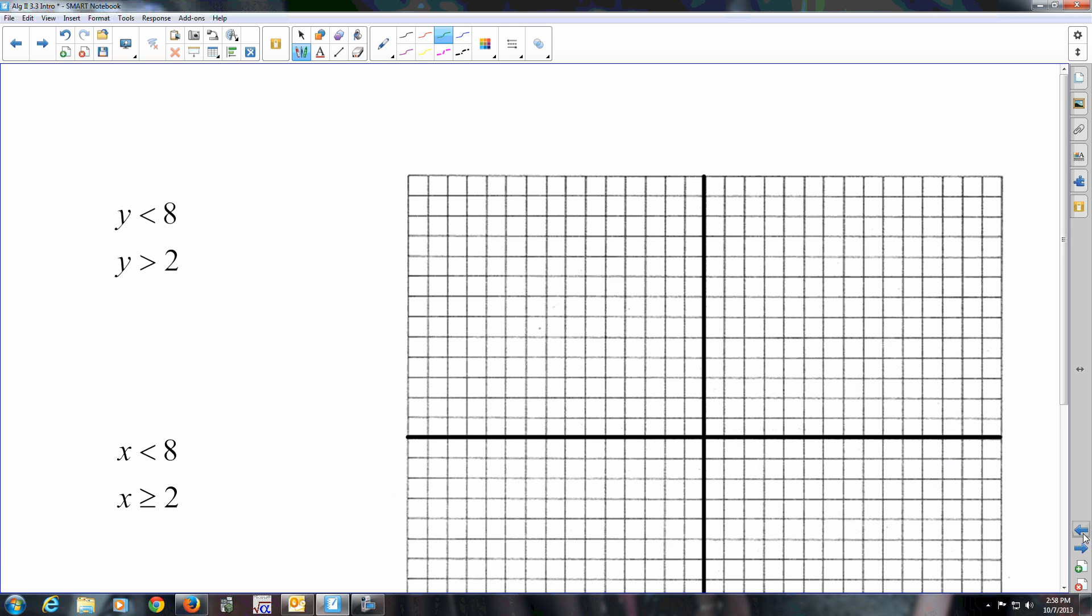Next one. Remember those two are horizontal lines. They're horizontal, I apologize. It only has the y. So remember it's only going to cross the y, so it's going to be a horizontal line. In this case it's a horizontal line at 8.